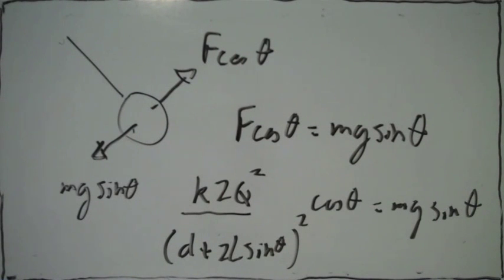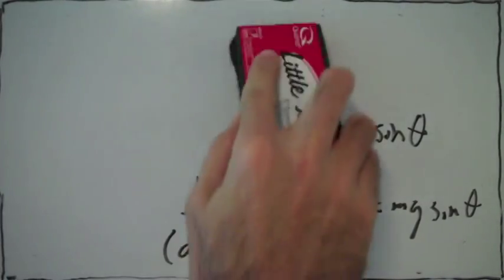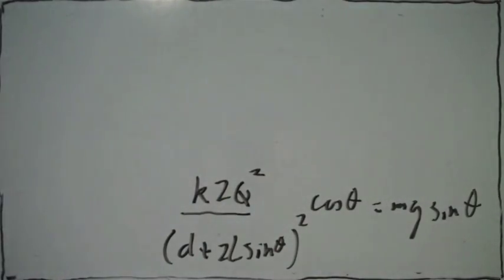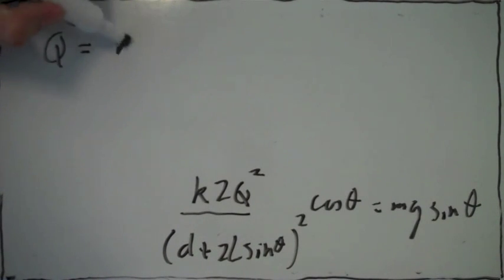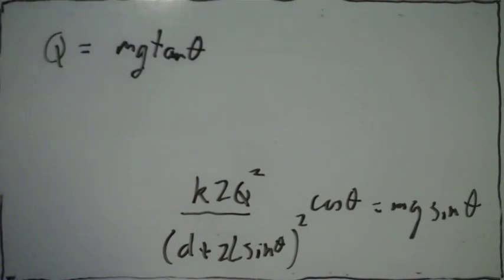So now all we have to do is solve for q, and then we find what the charge of the masses are. So this equation that we have, we solve for q, and we find that q is given by this expression.